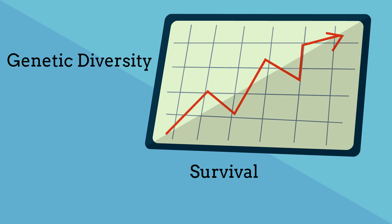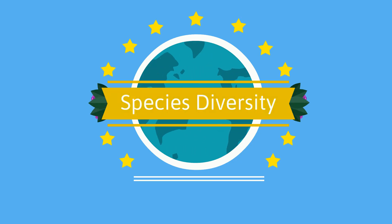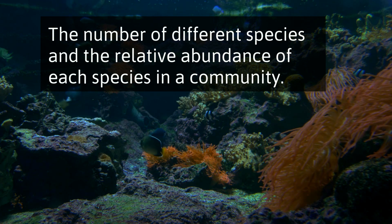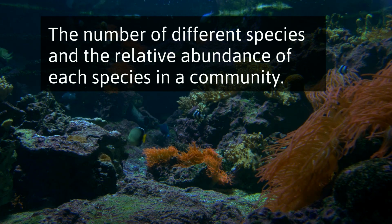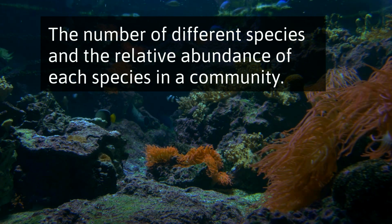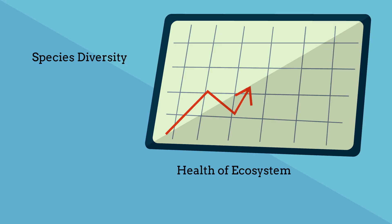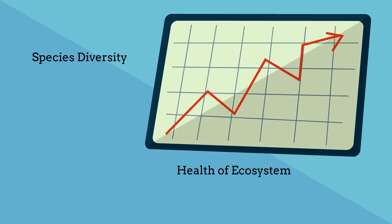Species diversity is the number of different species and the relative abundance of each species in a community. A rainforest may have 3 to 50 million different types of species living in the forest. As species diversity increases, most likely the health of the ecosystem increases.